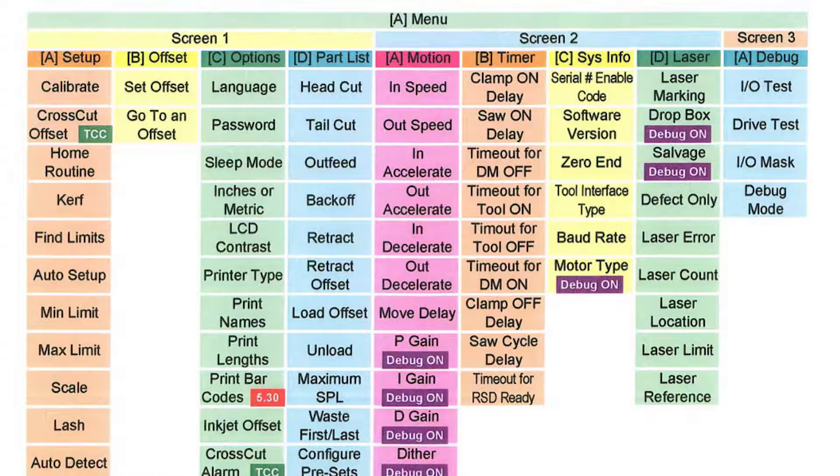In brief, you'll have menu number one, screen number one. These menus are what your operators are going to use. Things that will be involved in here will be your minimum length, your maximum length, your saw curve, cutlass, items like that.